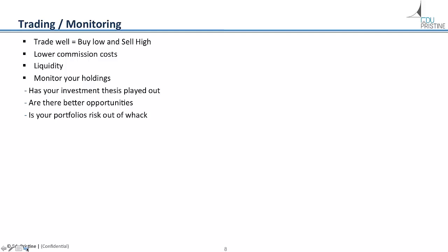The quantitative manager monitors the exposure of his portfolio to various signals or factors and risk characteristics to see if they need to be changed. For example, if the exposure to a valuation measure like price-to-sales has decreased relative to other signals, he has to trade to increase that exposure. Quantitative managers generally trade baskets of stocks at a time, unlike fundamental managers who trade one stock at a time. They pay a lot of attention to transaction costs, as commission costs can detract from returns if not monitored carefully.